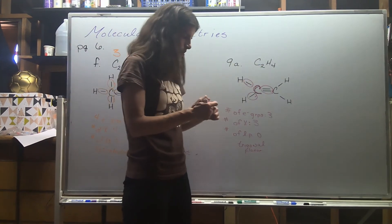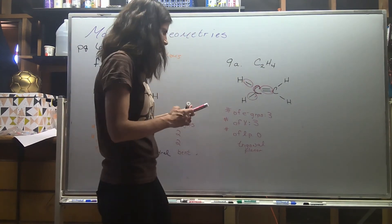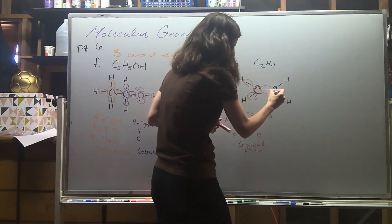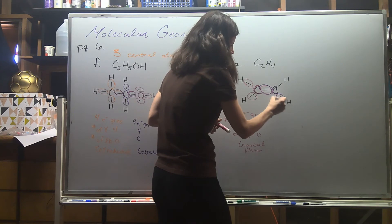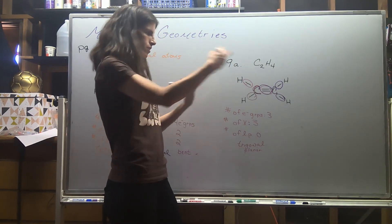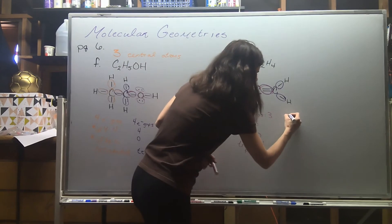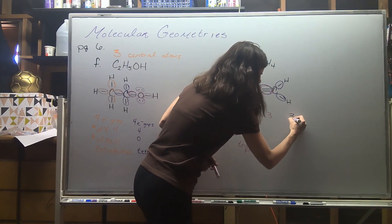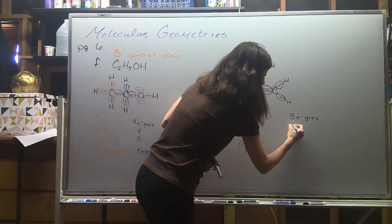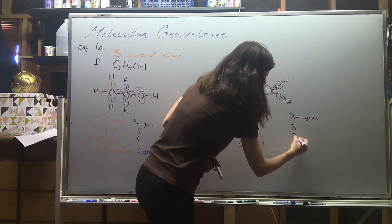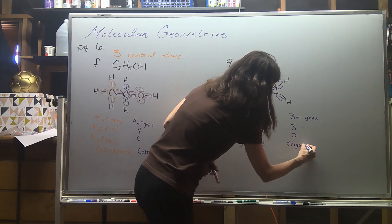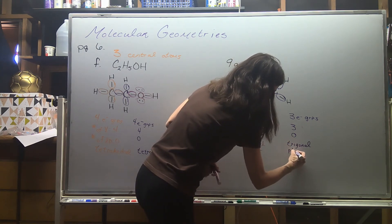This is a very symmetrical compound. For the other carbon, I circle the double bond again because it's attached to that carbon as well. It also has three electron groups, all three involved with bonding, zero lone pairs — so the other carbon is also trigonal planar.